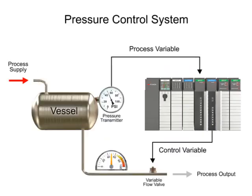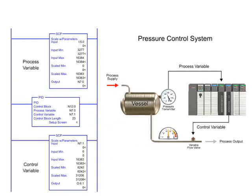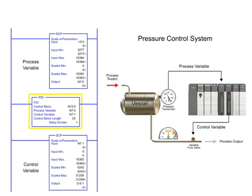In the following program example, the PID instruction is used to control pressure of a vessel, using a pressure transmitter as the process variable and a flow valve as the control variable. The set point is maintained at 50 PSI.